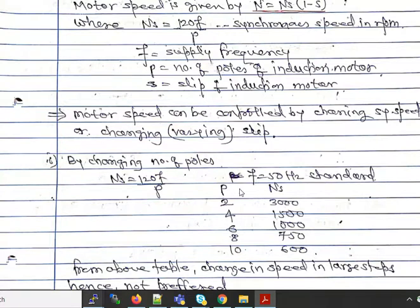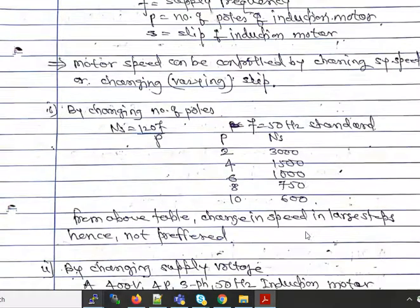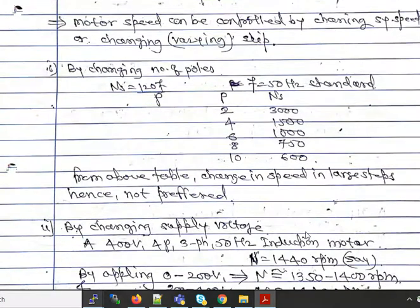By increasing the number of poles the speed decreases, but the decrease in speed occurs in large steps — 3000 to 1500, then 1500 to 1000, 1000 to 750, and so on. Therefore the change in speed is large in steps and hence this method is not preferred.